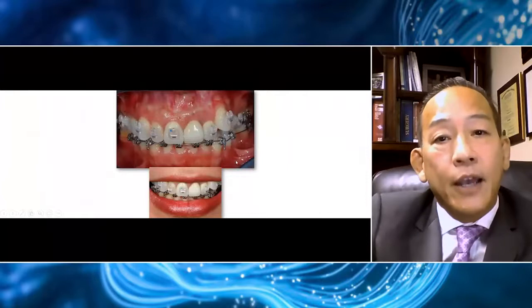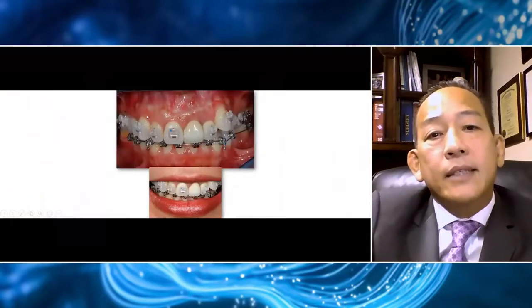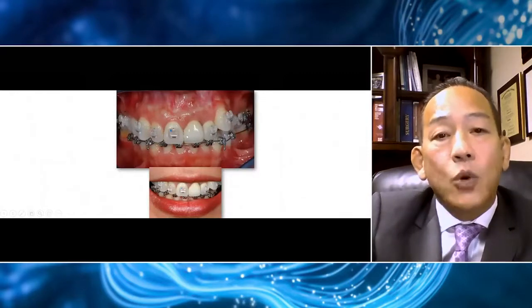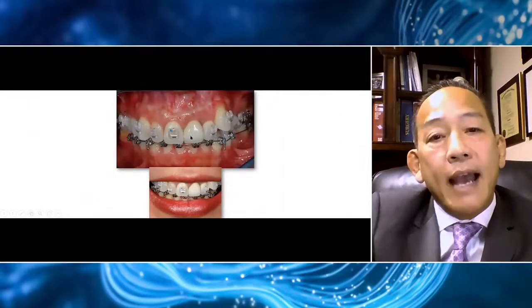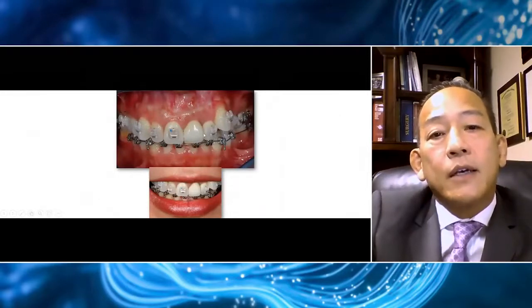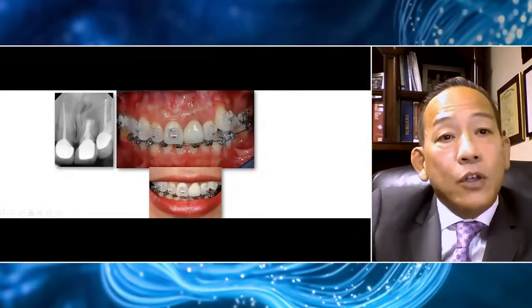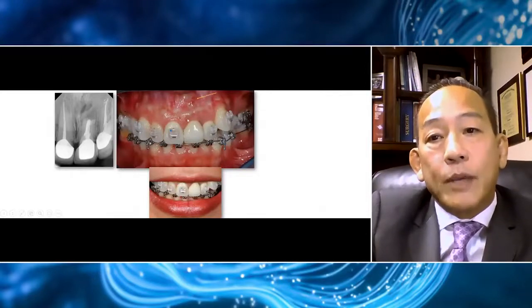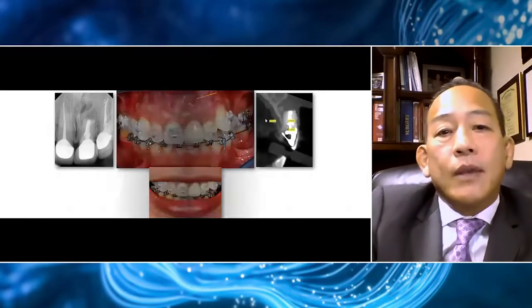I'm going to share a number of cases illustrating tips on how we use the relationship between flap design and membrane selection. Our first case is a young, attractive female with a high lip line. She has a failing left central incisor — you can see the fistula forming. She's undergoing orthodontic treatment and is now ready to have this tooth extracted. On the x-ray you can see a large radiolucency from her previous surgery and scar tissue from endodontic surgery. She's had an apicectomy and longstanding fistula formation. On the CT scan you can see the large bone defect.